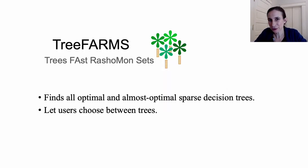Now we introduce an algorithm called TreeFARMS or Trees Fast Rashomon Sets, which efficiently finds and stores all optimal and almost optimal sparse decision trees and allows the user to choose between trees.